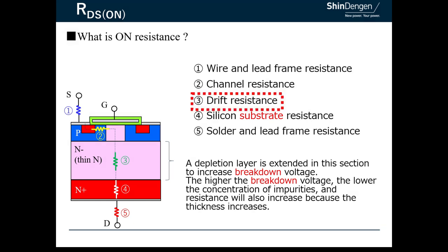Layer three is called the drift layer, and this layer determines most of the breakdown voltage and RDS(ON). It is possible to increase the breakdown voltage by intentionally lowering the impurity concentration and by making the layer thicker. But the side effect is to increase the RDS(ON).